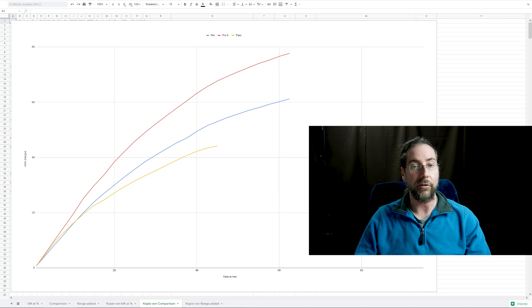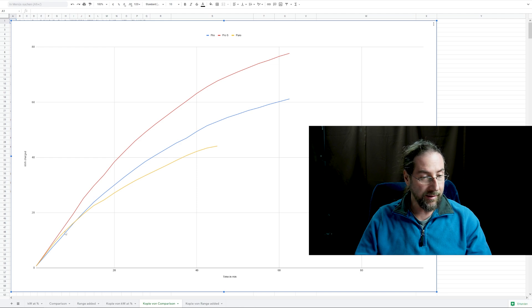But let's look at the important stuff: how many kilowatt hours are being charged into the battery in minutes. Again same colors: yellow is the Pure, blue is my Pro, and red is the Pro S. As you can see, except for the beginning, the first 10 minutes where the Pure is a tiny bit better than my car again because of that update, my ID.3 charges more kilowatt hours into the battery than the Pure, and the Pro S is just way better.